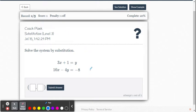In these problems, you're typically given one equation that's in either y equals form or x equals form. In this case, it's 3x plus 1 equals y. So we can take the 3x plus 1 and substitute that for y in the bottom equation.